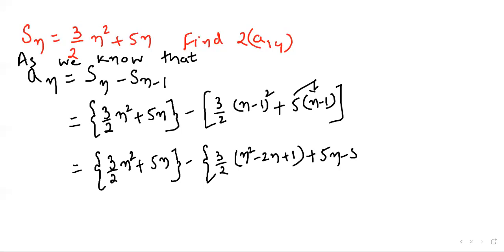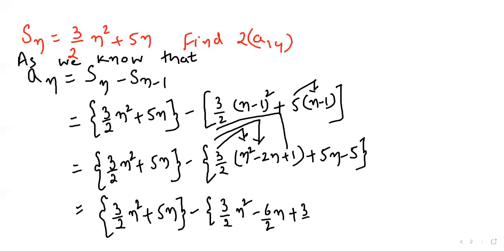Now we need to open the bracket. 3 by 2 n squared plus 5n minus 3 by 2 n squared minus 6 by 2 n plus 3 by 2 plus 5n minus 5.